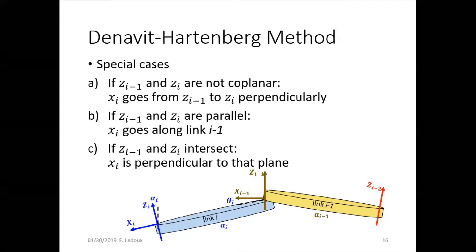There are some special cases for parameter assignment. Usually you want Z to go along the axis of the joint and then X to go between the axis before to the current axis, perpendicular to the Z axis. If Z i and Z i-1 are not in the same plane, then X goes perpendicularly between them.